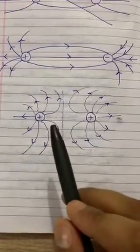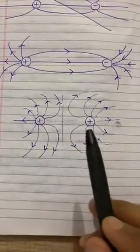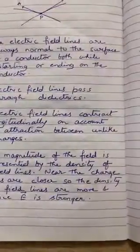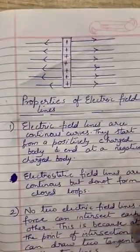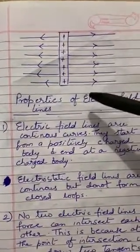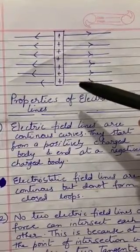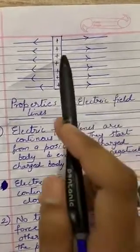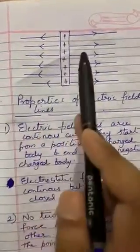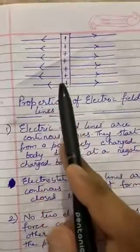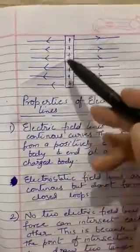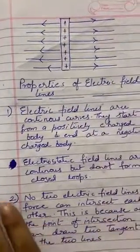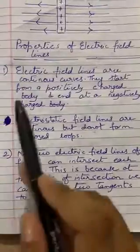For positive charges the field lines are radially outward, and for negative charges they are radially inward — and we know they are repulsive in nature for like charges. Now suppose we have a long rod carrying positive charges; we will have a uniform electric field that is radially outward from the rod, meaning the field is directed normally outward from this positive charge-carrying rod.